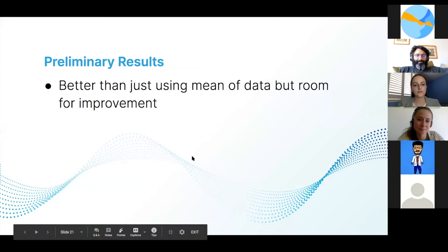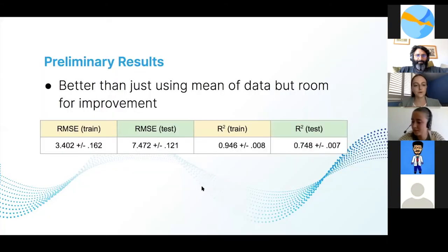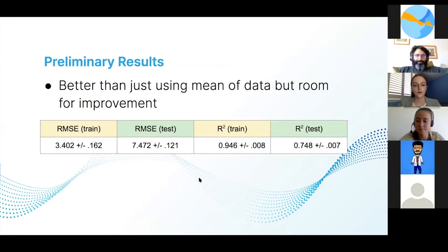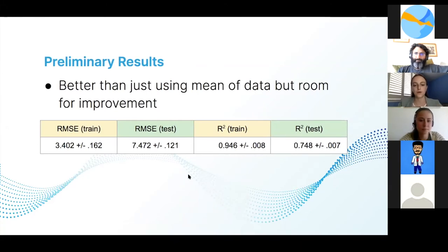So using this method, we have some preliminary results. Our results show the algorithm works better than just using the mean of the data to predict rate constants, but there's still room for improvement. In case you're wondering what an output from the algorithm might look like, this is a nicer version. We use two different metrics to measure how good our predictions are: root mean squared error and an R squared value. We run both the training set and testing set through the algorithm.